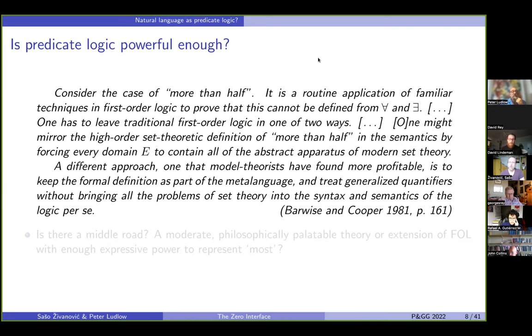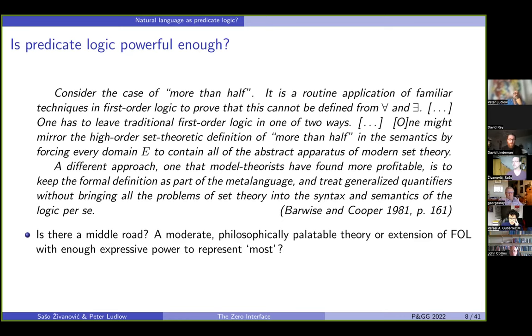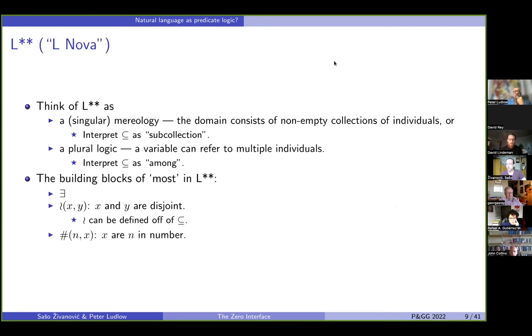So we are actually asking ourselves the question, is there a middle road? Is there some extension of first-order logic, which would be expressive enough to do most and friends? But it wouldn't be the entire set theory. It would be something a bit more palatable, perhaps. And we believe there is a middle road and we call it L-nova. We call it L-nova because it used to be called L-star, the previous version of this language, and then this star exploded and went nova. So now it has two stars and it's L-nova.